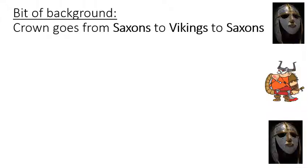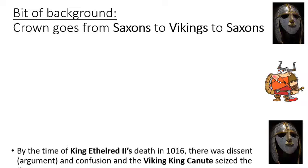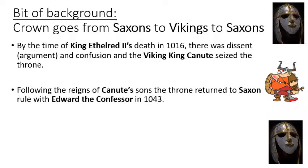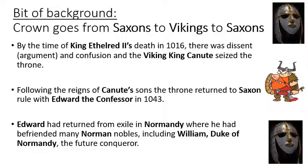A bit of background about the years before 1066. By the time of Aethelred II's death in 1016, there was dissent, arguments, and confusion, and the Viking king Canute seized the throne. Canute was king for a while and his sons followed him. In 1043, Edward the Confessor took back the English throne for the Saxons and the Vikings were pushed out. Edward had returned from exile in Normandy where he'd been protected by the Normans, and one of the Norman nobles he'd become friends with was William, Duke of Normandy.